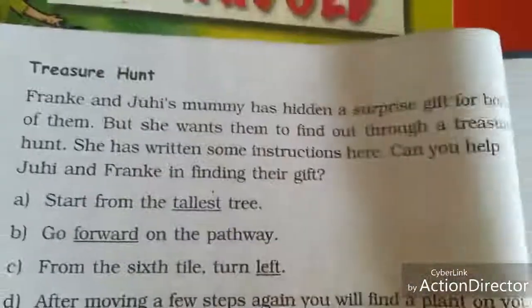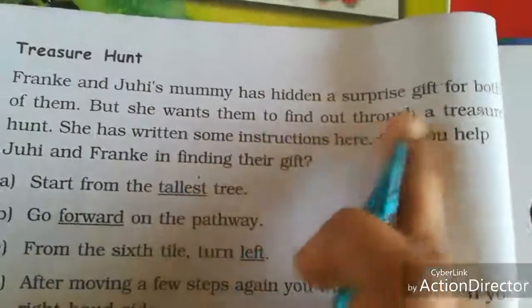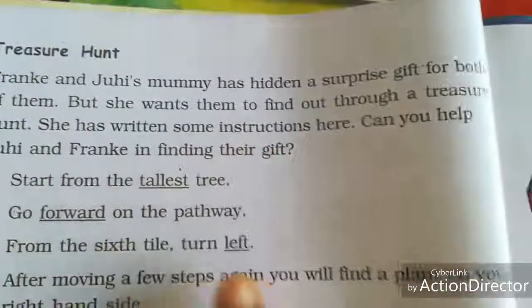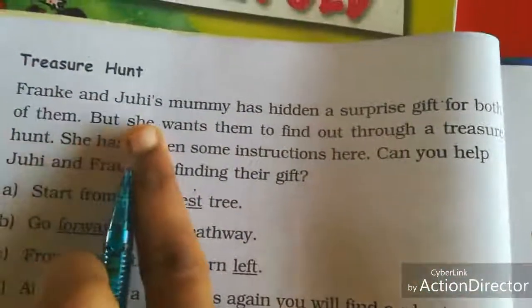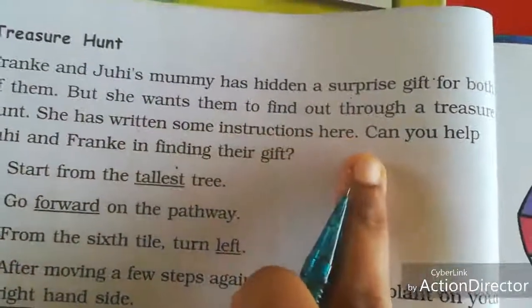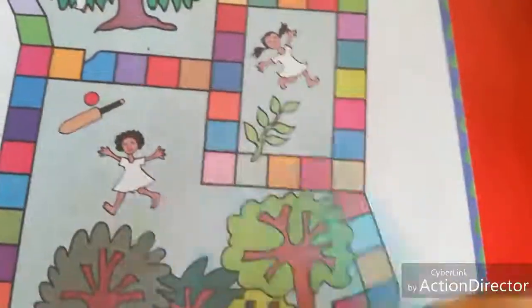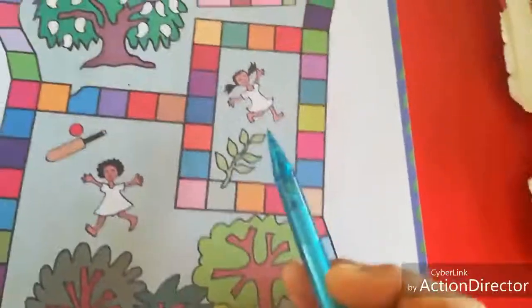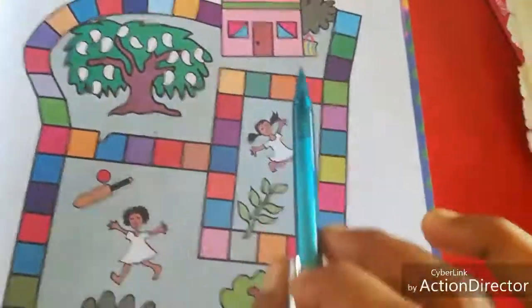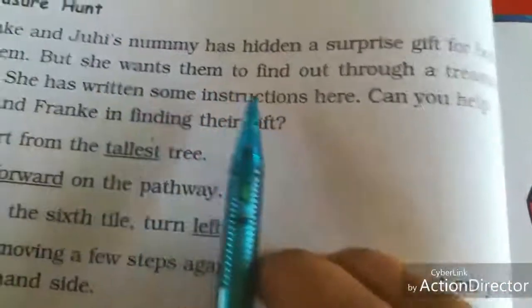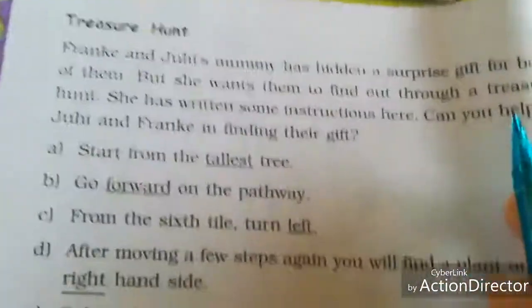Now open your book to page number 74 — Treasure Hunt. Frankie and Juhi's mummies have hidden a surprise gift for both of them. Both mummies have hidden one surprise, and now we are going to find out the surprise.